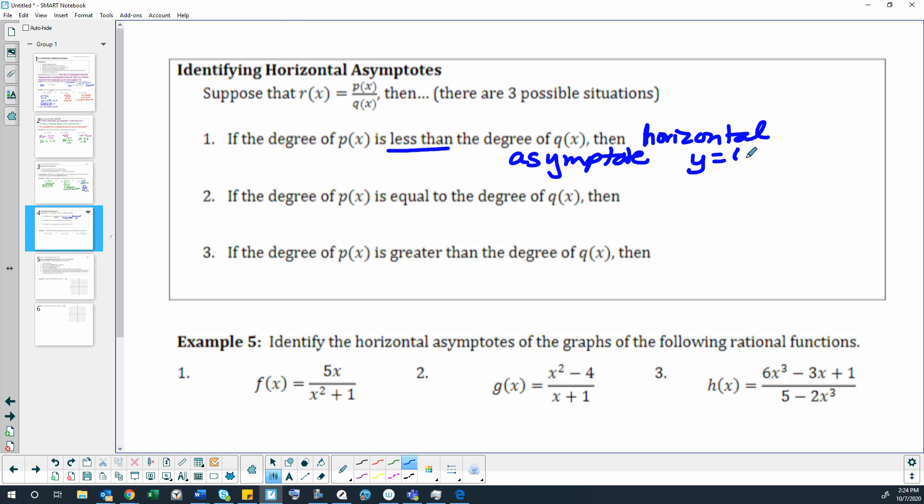If the degree of p of x is equal to the degree of q of x, so we have equal degrees in those two polynomials in the top and the bottom of our rational function, then the horizontal asymptote is a little bit trickier to identify. The horizontal asymptote will be the leading coefficients of each polynomial.